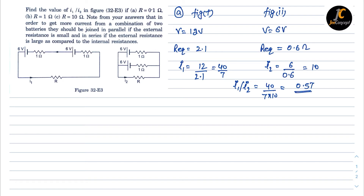For part b, R is now 1 ohm. The voltage for figure 1 is again 12 volts and for figure 2 the voltage is 6 volts. The equivalent resistance for figure 1 is 1 plus 1 plus 1, which equals 3 ohms.